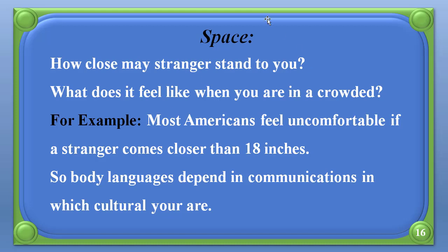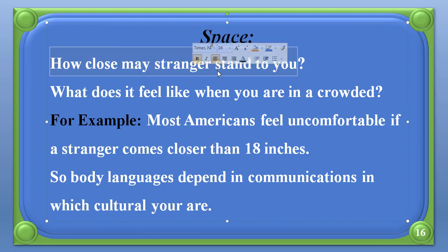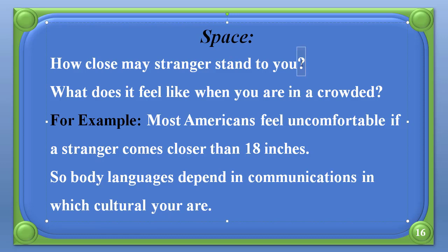Next is space. Space is related to proxemics — we look at social distance and whatever kind of distance applies. The point here is: how close may a stranger stand to you? If a stranger — an unknown person — is communicating with you, how close should they stand? For example, if you are walking on a road and someone on a bike comes very close to you, you will be frightened. But if they stop at a distance and ask for an address, you will be quite comfortable.